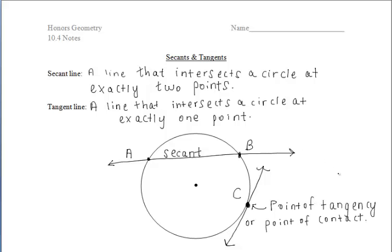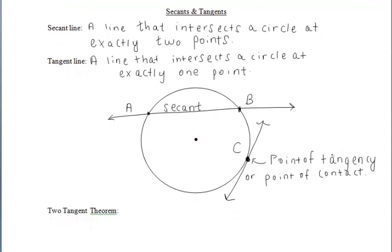We know that something special happens when we have our tangent line. A tangent line is always perpendicular to the radius drawn to the point of contact. Or in reverse, if a line is perpendicular to a radius at its outer endpoint, then it is tangent to the circle.